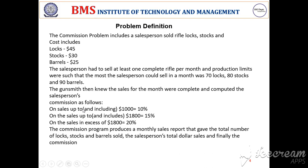The commission he makes is as follows: on sales up to and including $1000 he makes 10%; on sales up to and including $1800 he makes 15%; on sales in excess of $1800 he makes 20%. We are to calculate the total commission he makes and find faults in the program, if any.